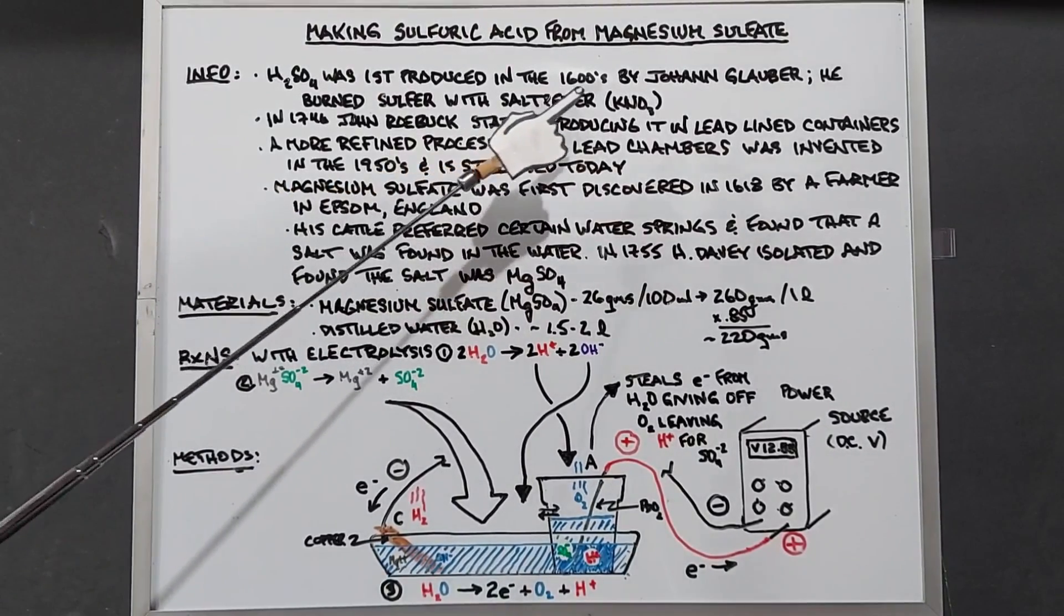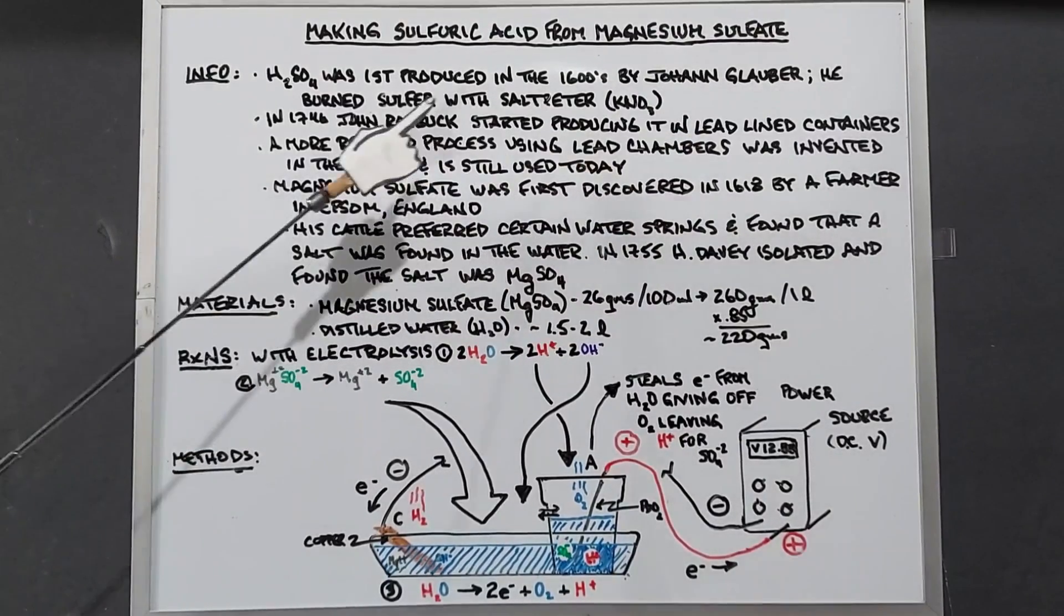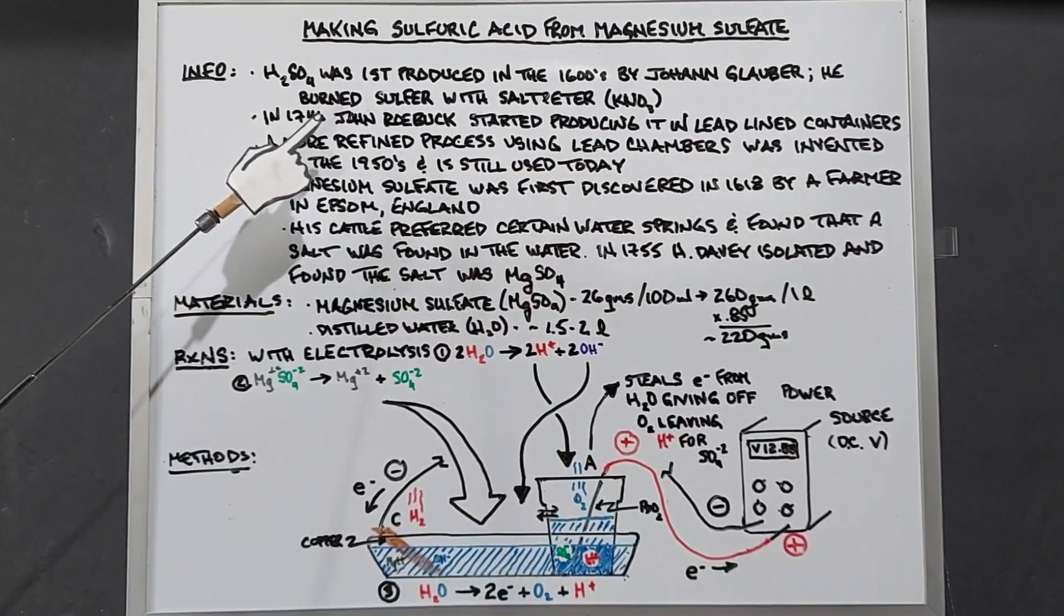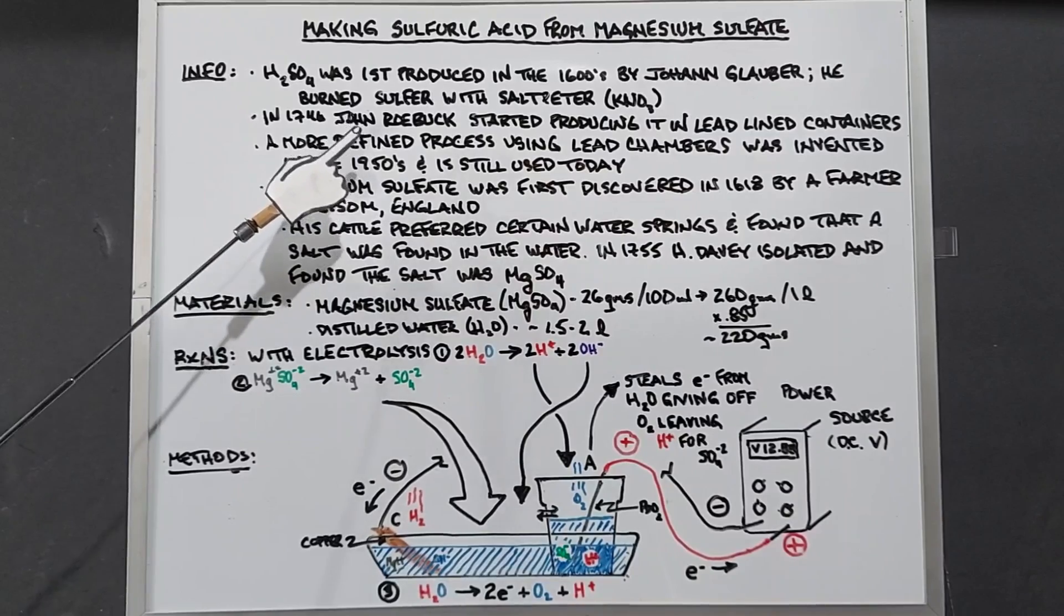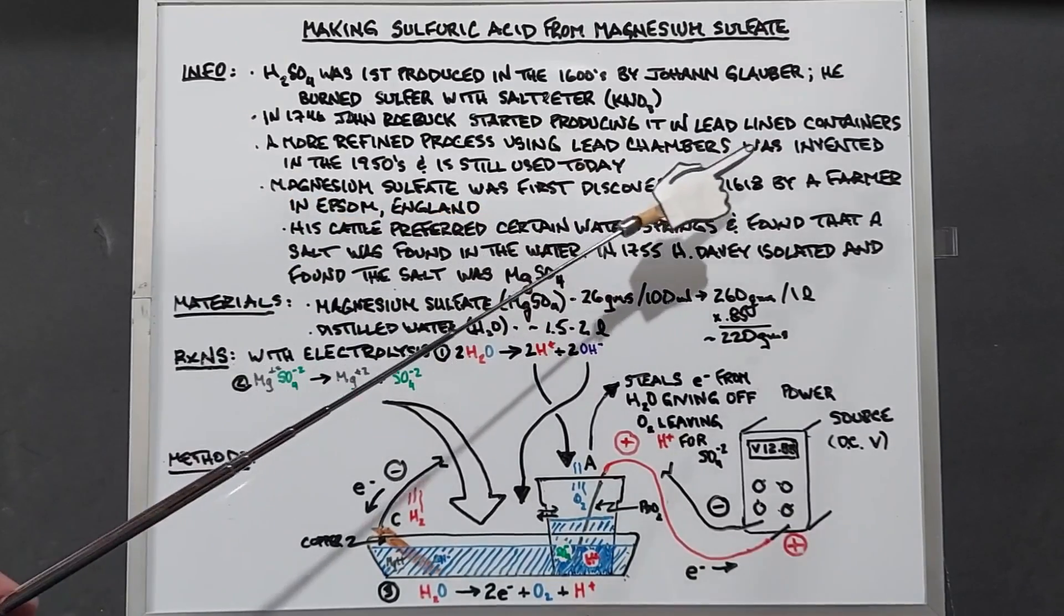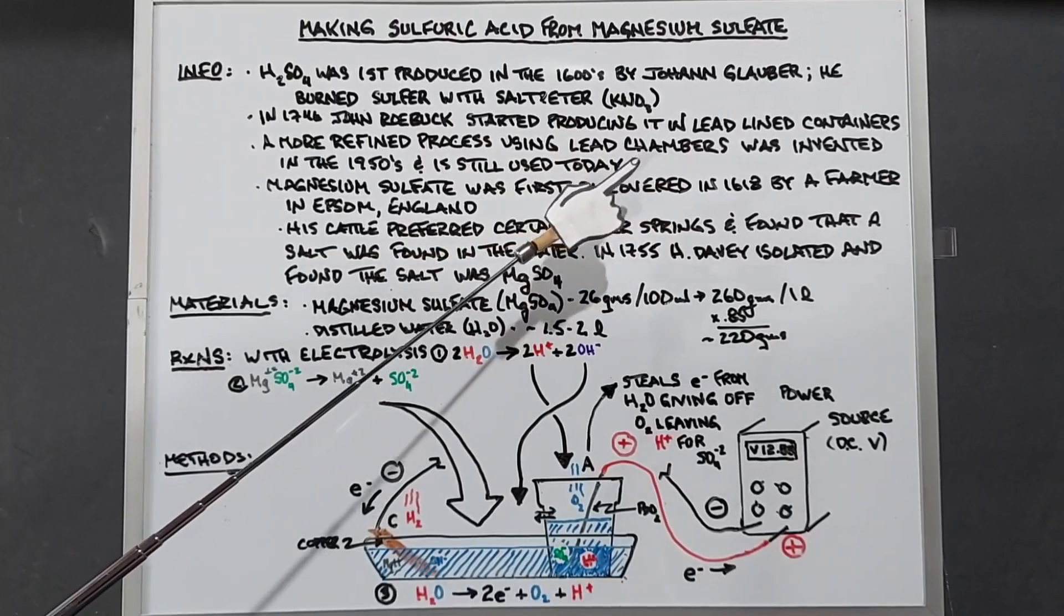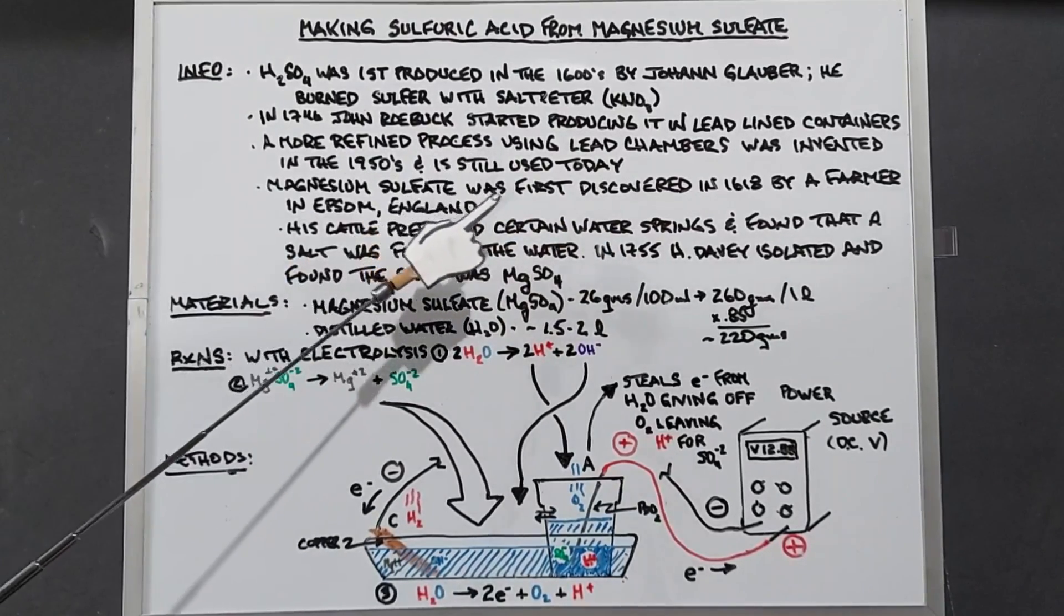Sulfuric acid was first produced in the 1600s by Johann Glauber. He burned sulfur with saltpeter, which is potassium nitrate. In 1746, it started to be produced in larger quantities when John Roebuck began doing it in lead-lined containers. A more refined process using lead chambers was invented in the 1950s, and this is the method still used today.